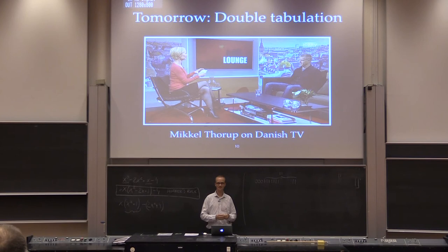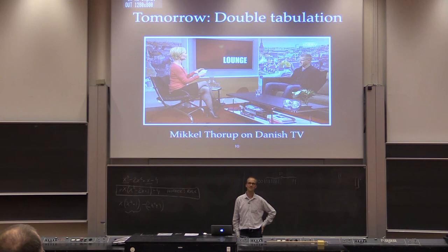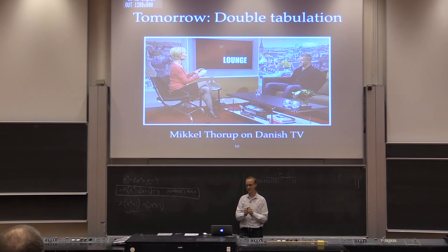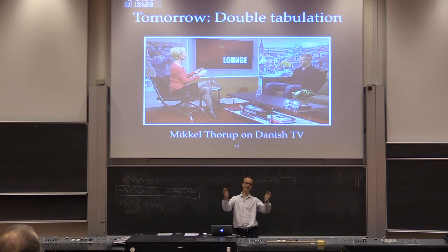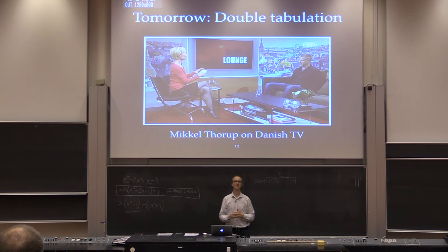What happens to the independence when you reduce the range? The independence remains — random variables, even if you map them, will remain independent. The only thing that happens is that if we have something in a range of prime size, when you map it down, you cannot have the same number of things hitting each new value, so it becomes a little bit non-uniform.